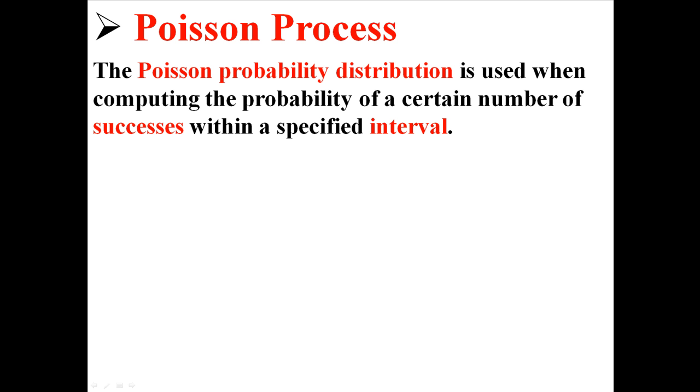The Poisson probability distribution is used when computing the probability of a certain number of successes within a specified interval, usually a specified time frame.